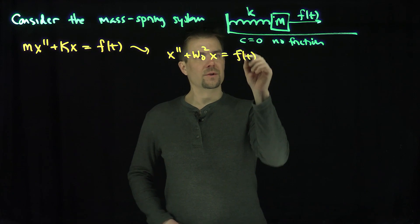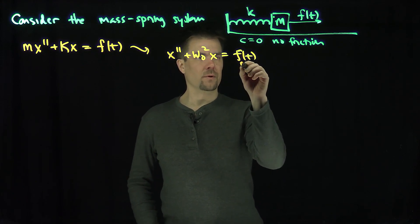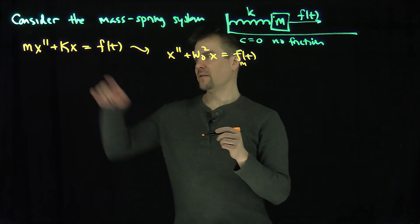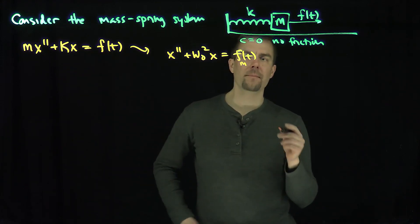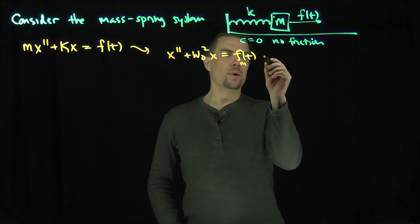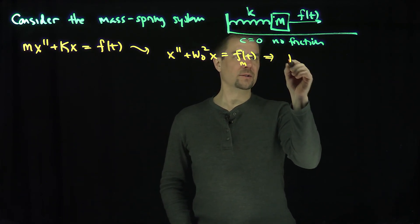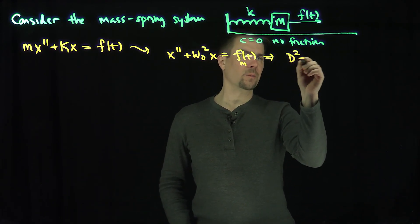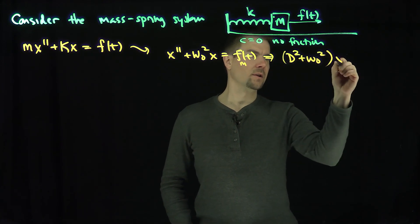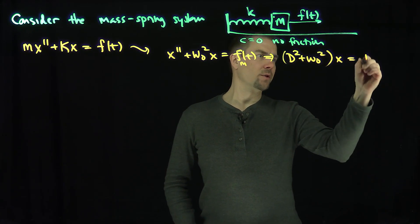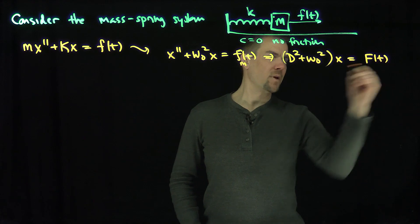This is a modified version of the force because we divide by m. We write this as (D² + ω₀²) applied to x equals f of t.